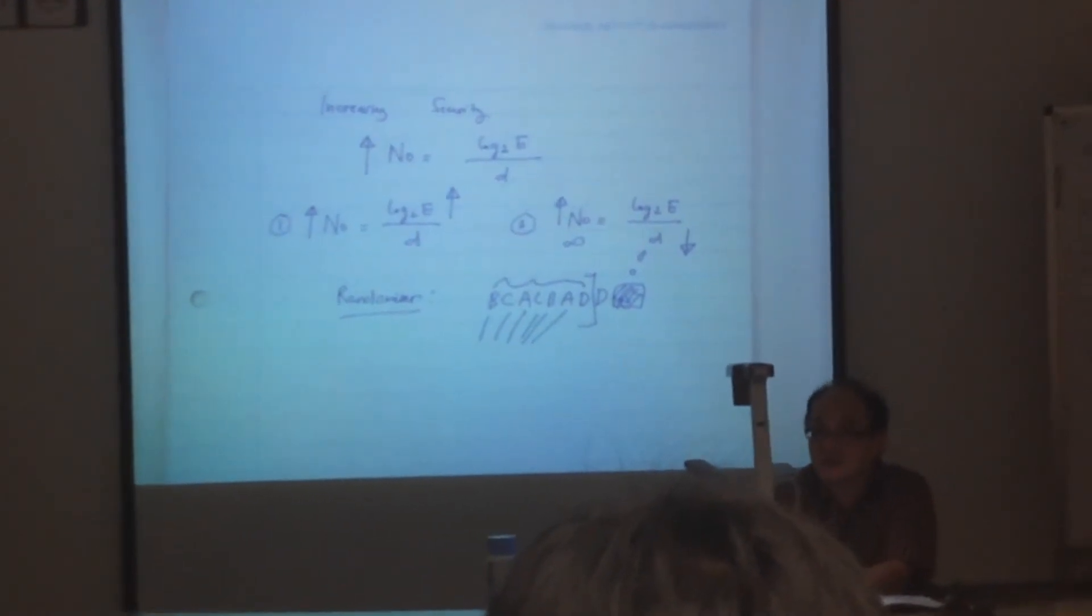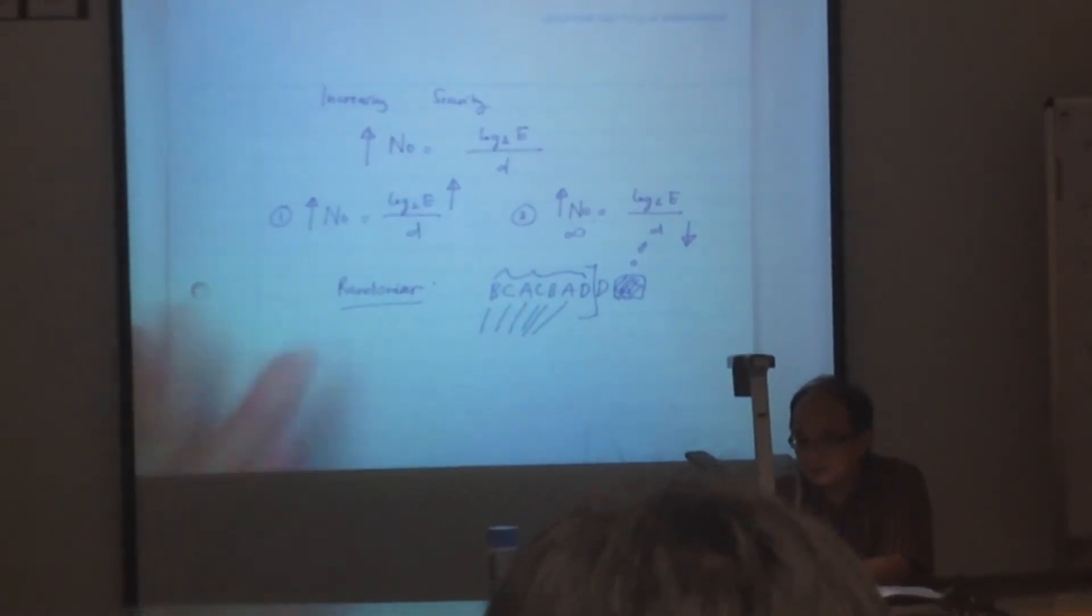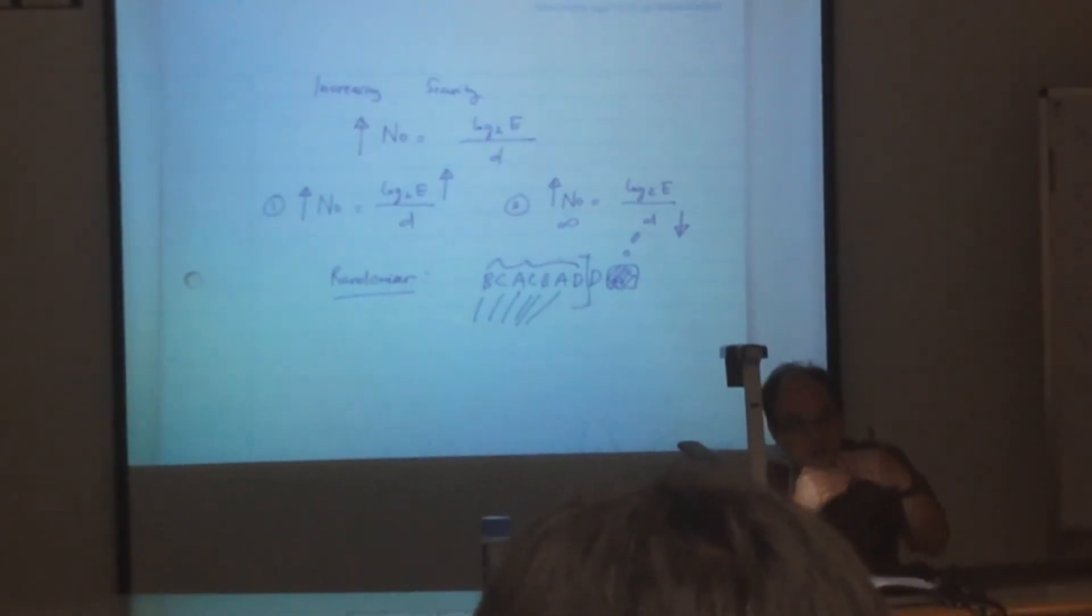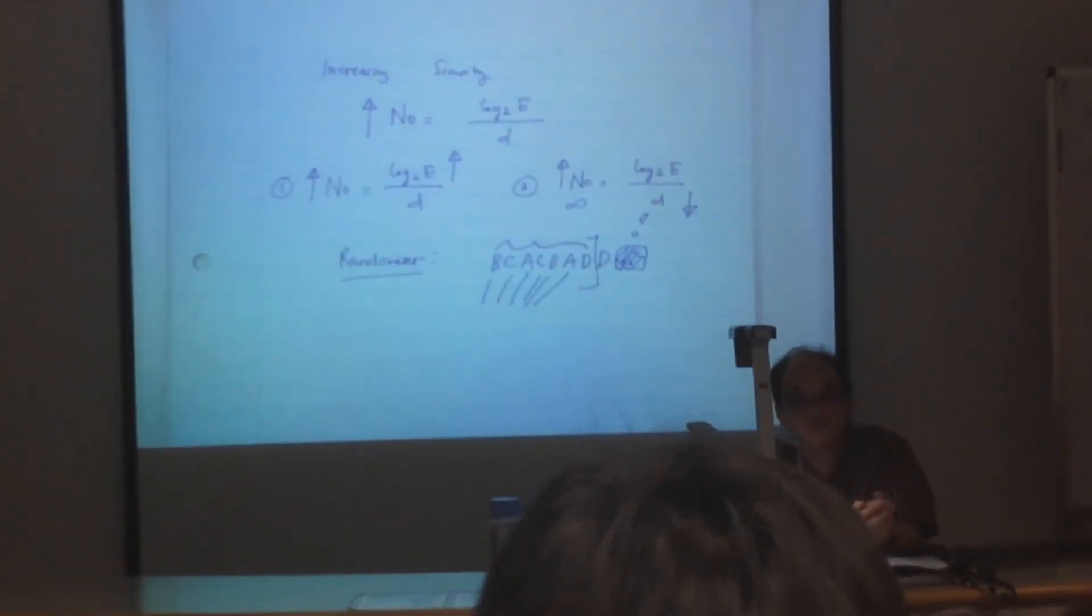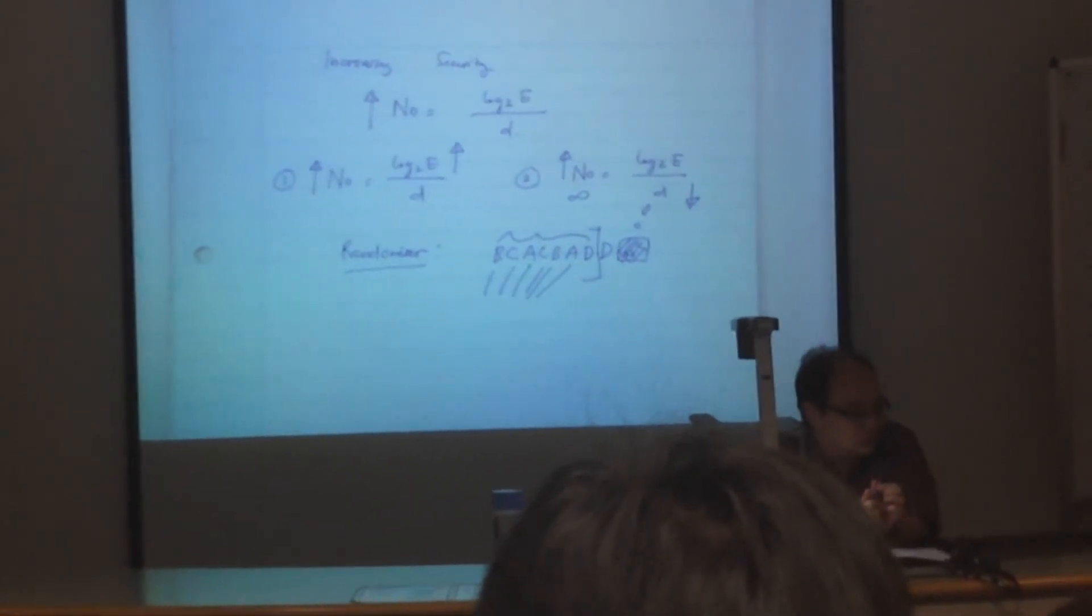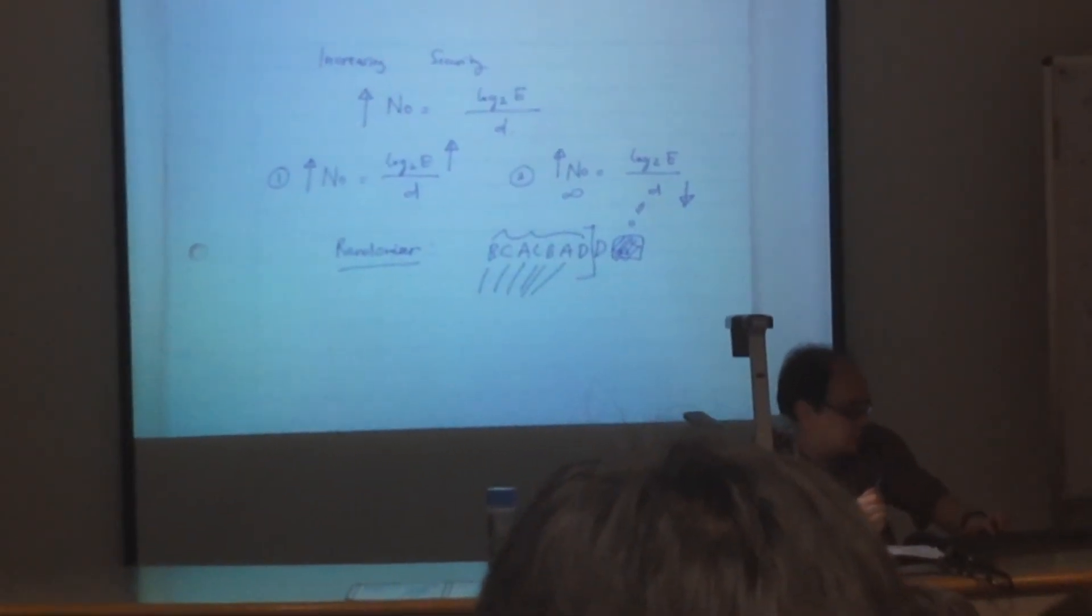This is a so-called randomizer. Because by using randomizer, now I can make so that the probability of the language becomes uniform. So that's how we can increase the security.